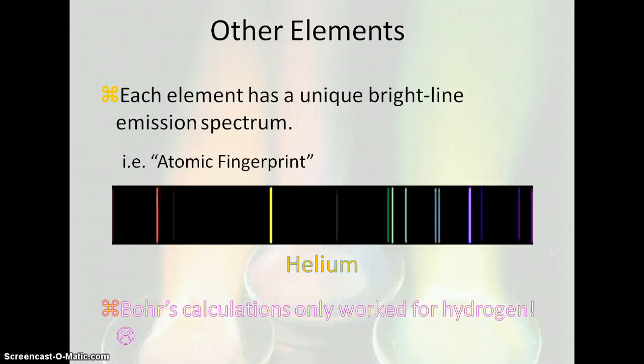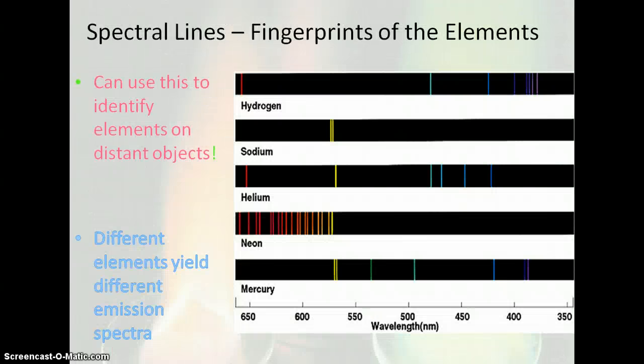However, Bohr's calculations based on his circular orbits only worked for hydrogen. The spectra can serve as a sort of atomic fingerprint — we can use these spectra, look through telescopes into outer space, and we are able to tell what the components of stars are by looking at the line spectra and comparing it with known elements. This is how we identify things in space.